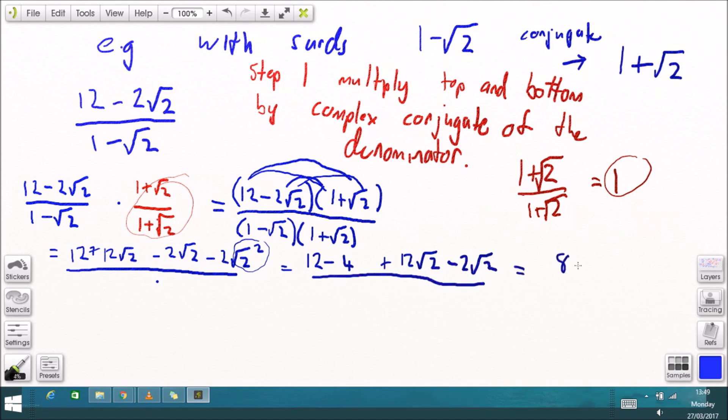this all simplifies down to 8 plus 10 root 2, 12 root 2 minus 2 root 2.